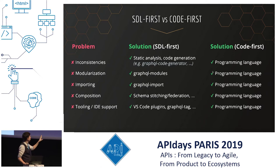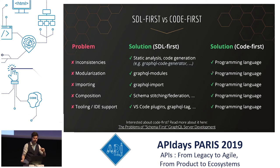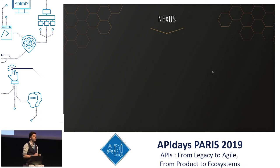I'm not going to go too much into the SDL-first and Code First approaches. If you want to learn more, I strongly suggest you read the article 'The Problems of Schema First GraphQL Server Development' by Nicholas Burke from Prisma, as well as watching his talk 'Code First GraphQL Server Development with Prisma,' from which this slide is from. Anyway, the people at Prisma decided the Code First approach was a better solution and so they wrote Nexus.